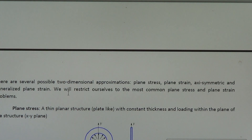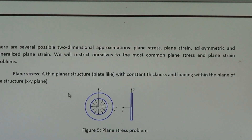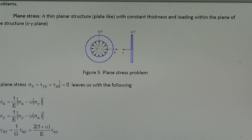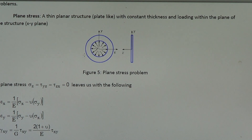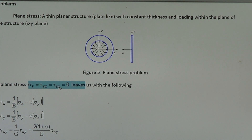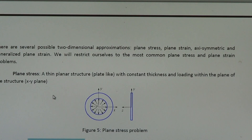There are conditions we can apply to simplify a 3D problem to a 2D problem. You're probably familiar with plane stress and plane strain problems. For plane stress, we have a planar plate-like structure — a thin plate with constant thickness — and the loading is in the xy plane. Because the thickness in the z-direction is very small and uniform, we can say that all stresses in the z-direction, both normal stress and shear stress, are zero.